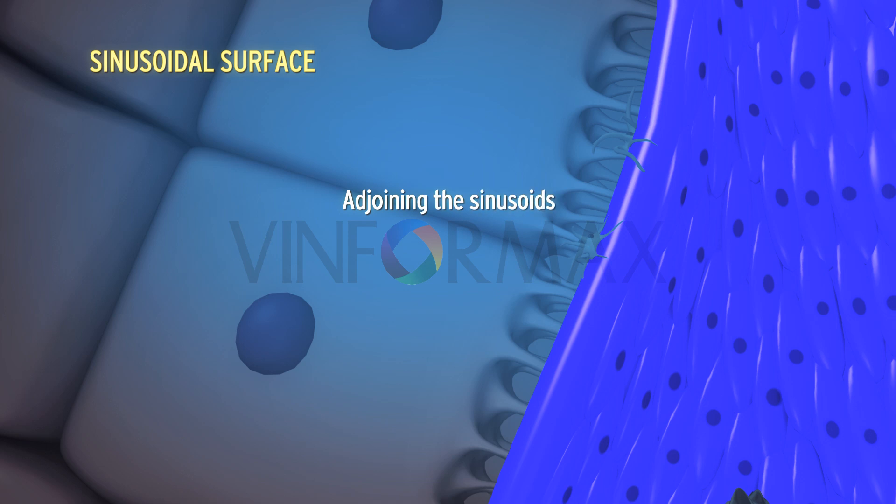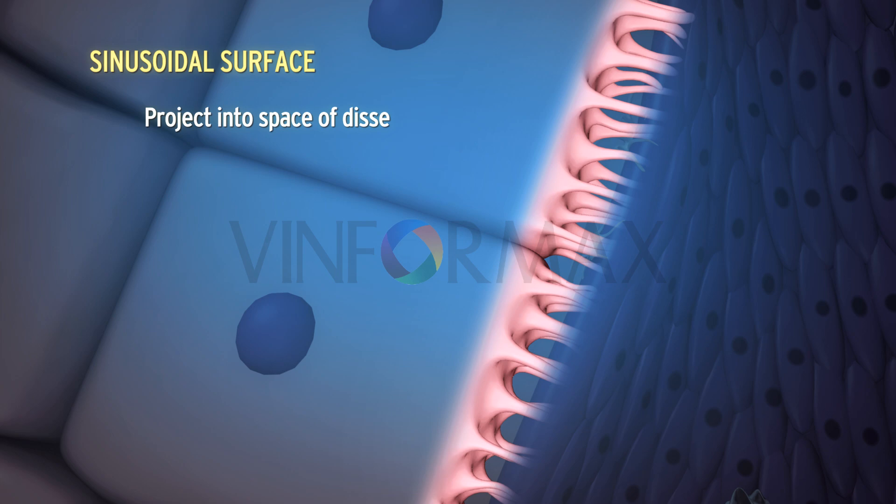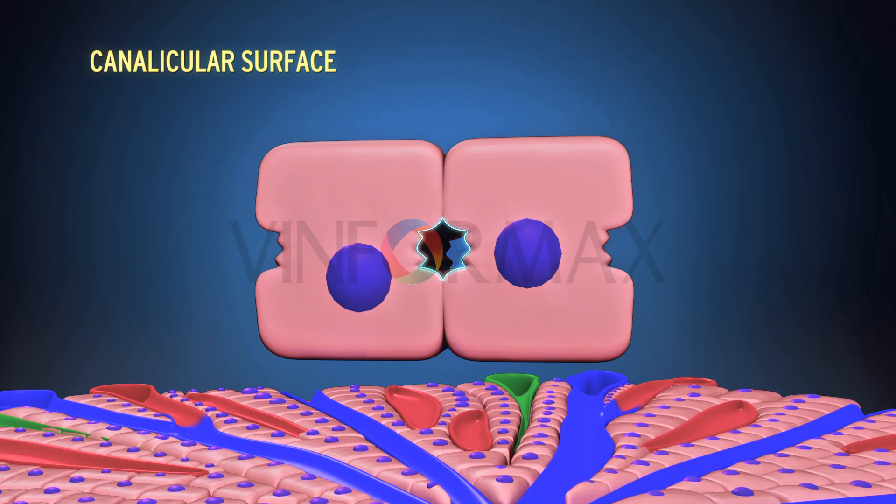The sinusoidal surface is the cell surface of the hepatocyte adjoining the sinusoids. It bears microvilli that project into the space of Disse.